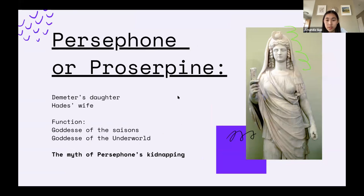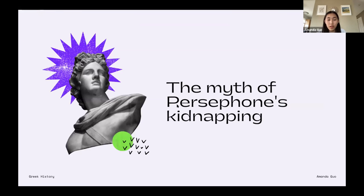Next we're going to talk about Persephone, or Proserpina as the Romans call her. She is Demeter's daughter and Hades's wife — the goddess of seasons and goddess of the underworld. Last time we ran out of time to cover this myth, so today we'll talk about the myth of Persephone's kidnapping. Hades was looking for a wife; he saw Persephone and wanted her. He asked his brother Zeus, and Zeus said okay. One day when Persephone was picking flowers, Hades kidnapped her and brought her to the underworld, where he is king.